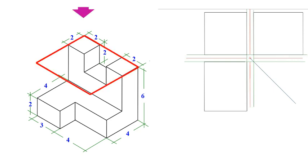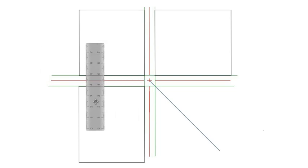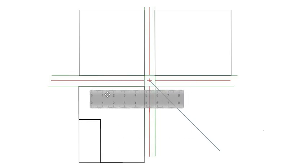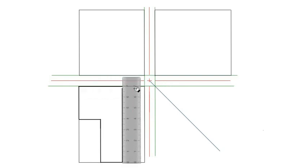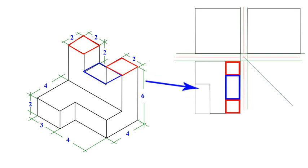We will start with the top view, then move to the front view, and finally to the left side view. In the top view, we mainly observe two shapes — rectangles: one measuring 4 by 7 units, and another measuring 2 by 7 units. The 4 by 7 rectangle has a 2 by 4 rectangle cutout from it, while the 2 by 7 rectangle consists of two 2 by 2 squares placed side by side, along with a 2 by 3 rectangle at the center between them.